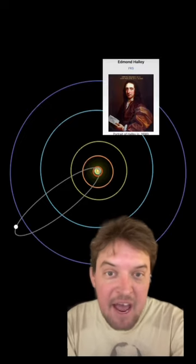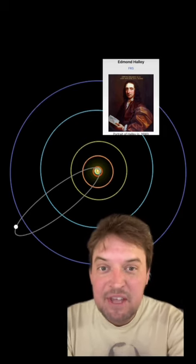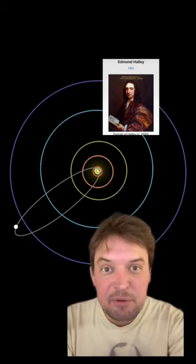But it was Isaac Newton's friend Edmund Halley who calculated its orbit and predicted its return in 1758, which would happen 14 years after he croaked.